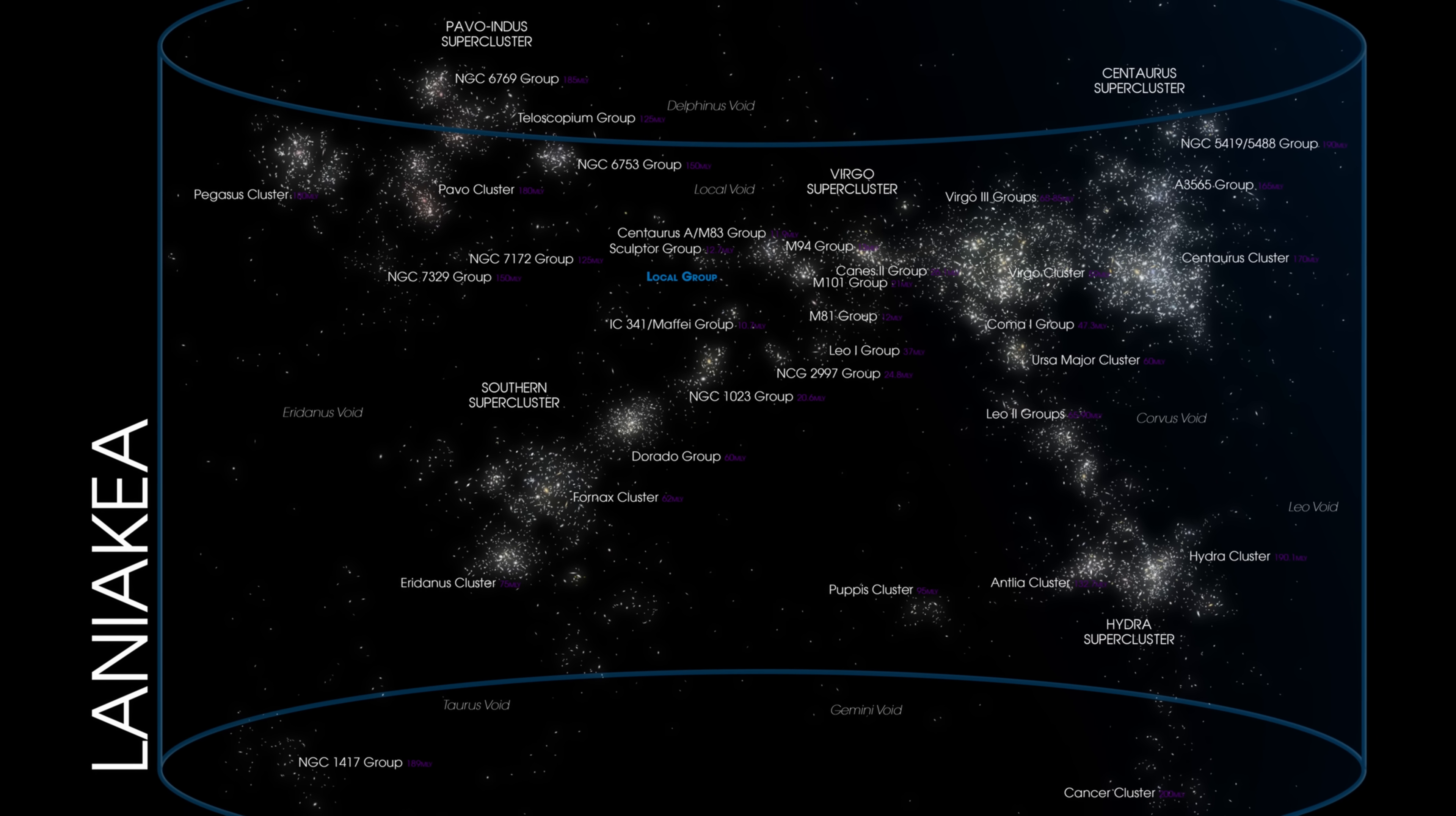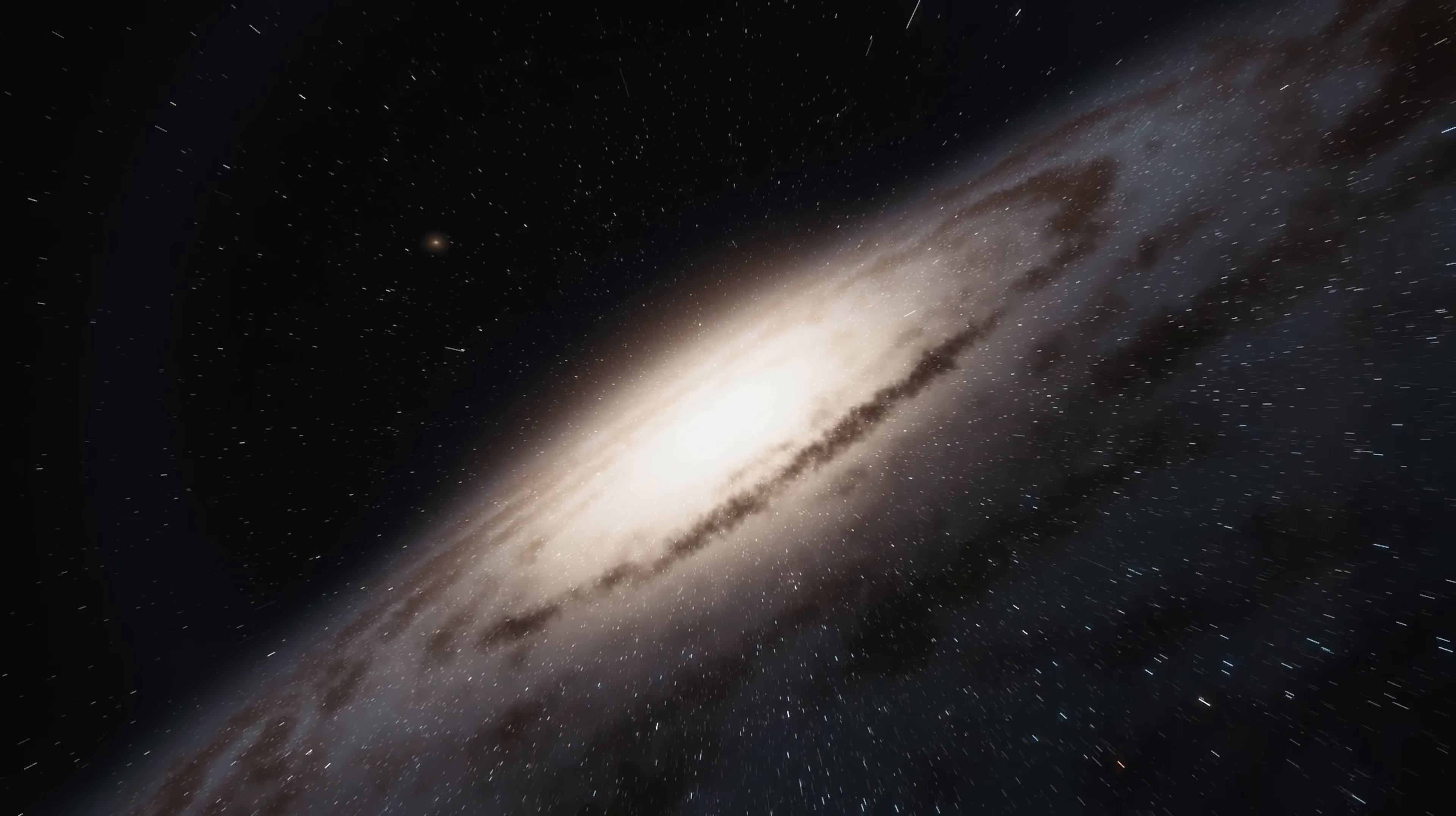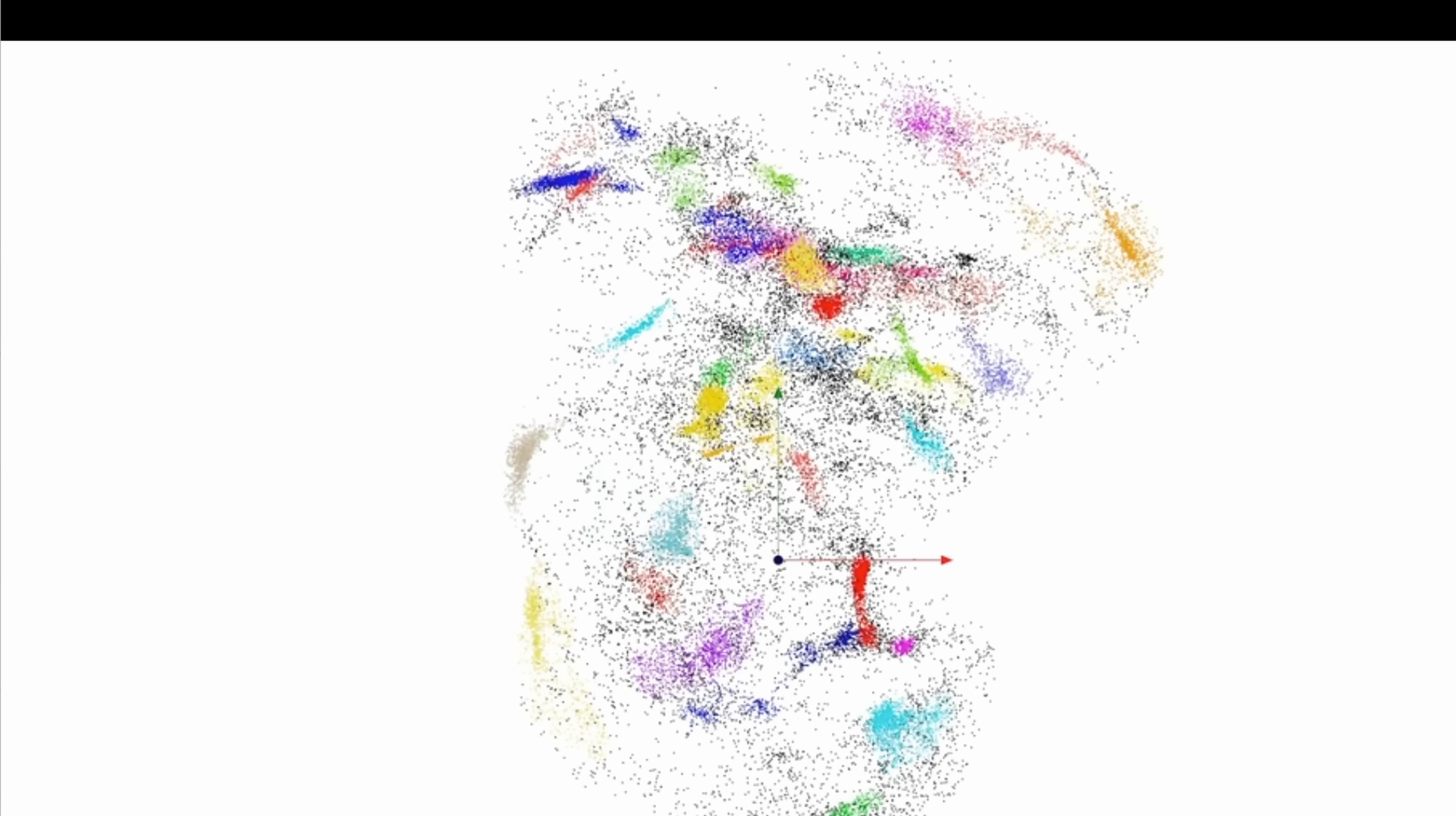Which basically means that Laniakea is just a much smaller part of the much larger cluster. Or just to rephrase this, the Milky Way is part of the Shapely Supercluster as well. Which in total encompasses over 700 million light-years of galactic space, and thus form one of the largest structures out there. But not the largest.